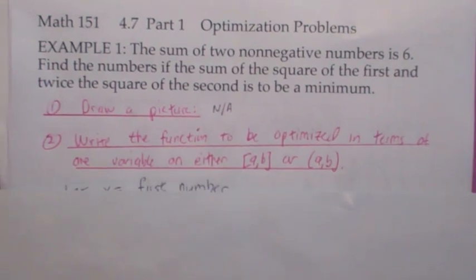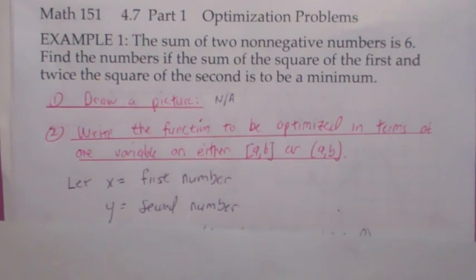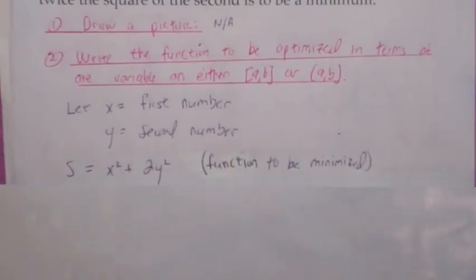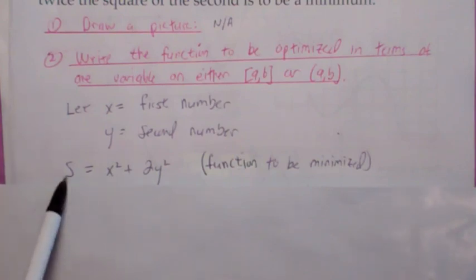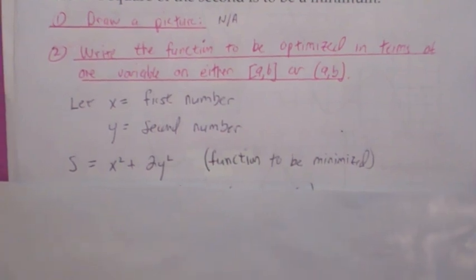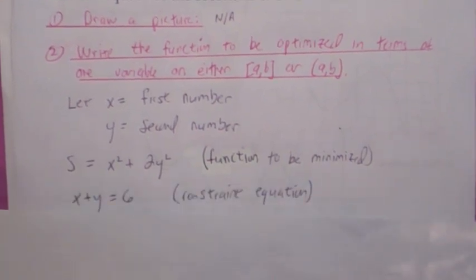Our goal here is to come up with a function that's going to be minimized. If you let x be the first number, y the second number, then the function we're going to find the minimum value of is s = x² + 2y². But you want to get this function in terms of one unknown. We've seen this before.